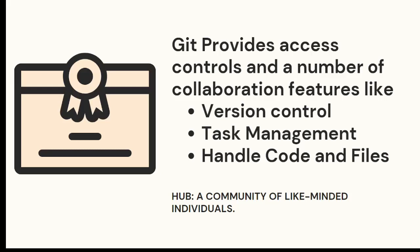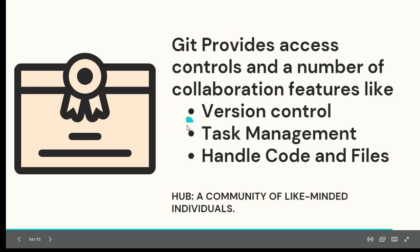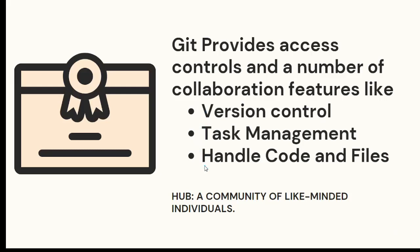The final takeaway: Git provides access to collaboration features like version control, which allows developers to keep track of revisions to their code. It also offers task management — you can manage tasks efficiently and handle code and files. To separate the terms: Git provides all these functionalities, while Hub is the community of like-minded individuals coming together to make version control, task management, and code handling possible. That is what GitHub is all about.